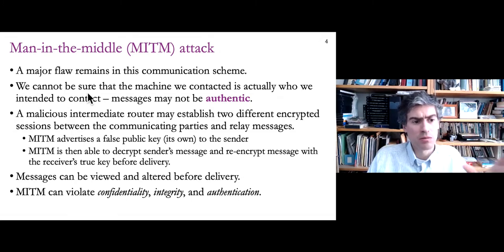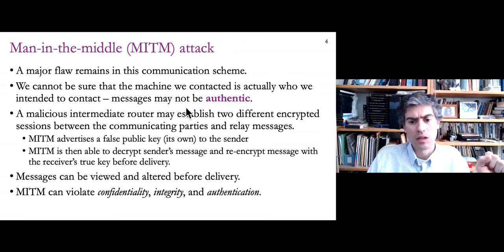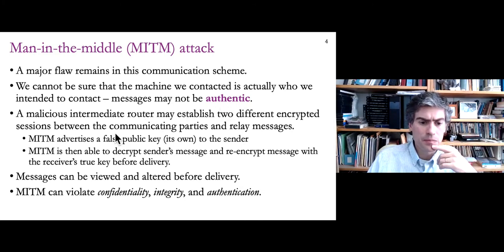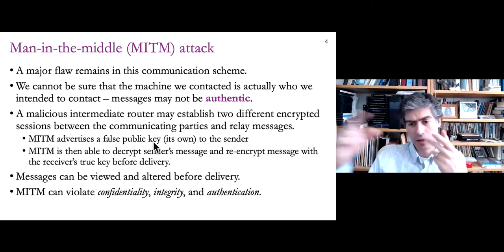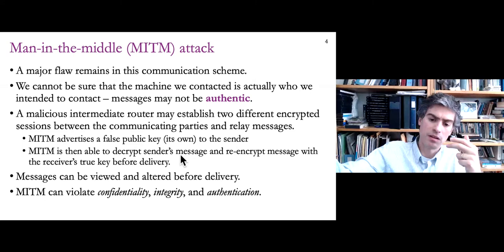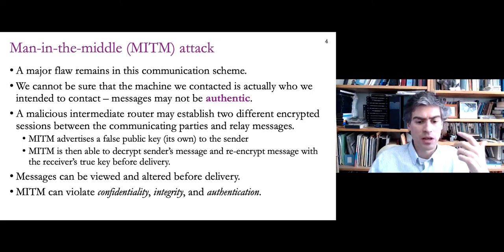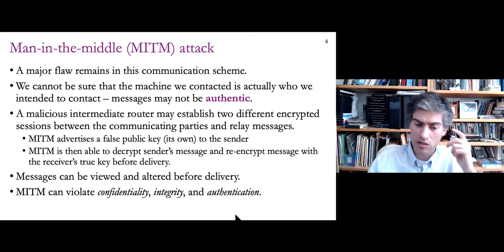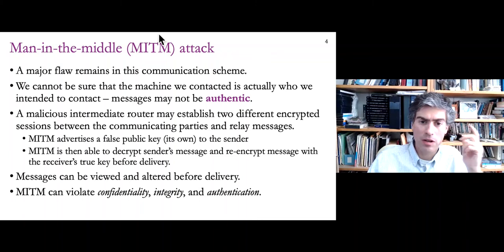Without introducing new techniques, we can't be sure that the machine we connect to is actually the one we intended to connect to, so the messages we get might not be authentic. A man-in-the-middle is a router in between a conversation that advertises a false public key instead of the public key of the person we're trying to talk to. It does a substitution, which allows the man-in-the-middle to see the contents of messages and change them. This is abstract at first, but I have an example to illustrate it.